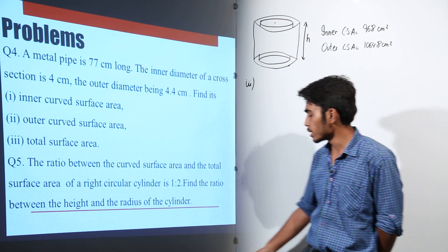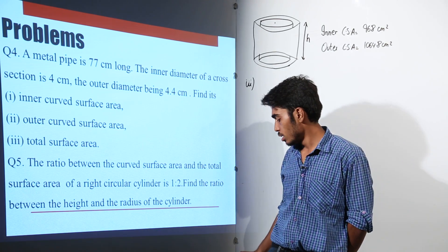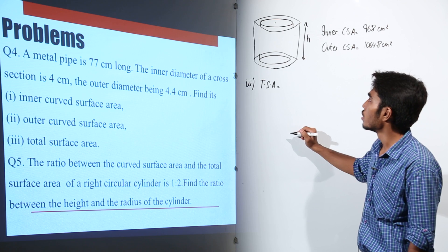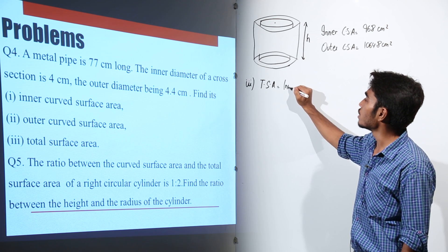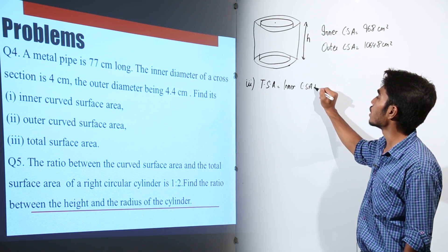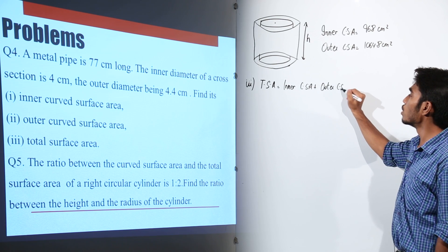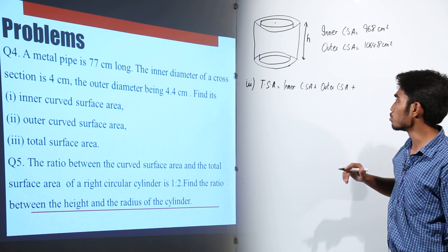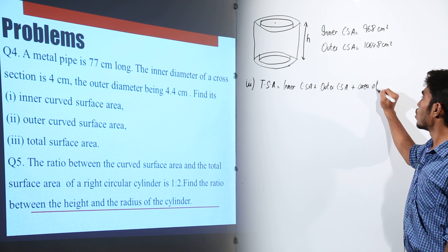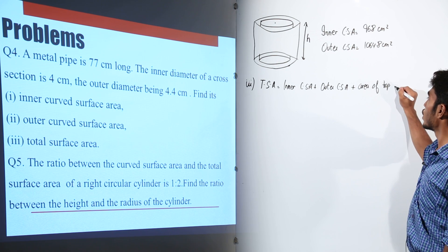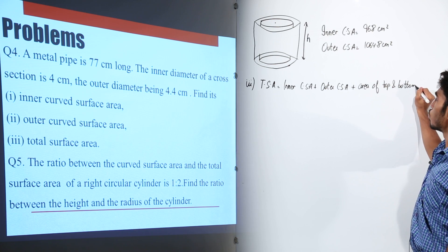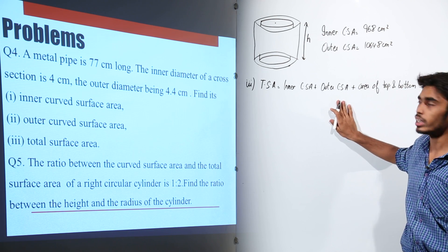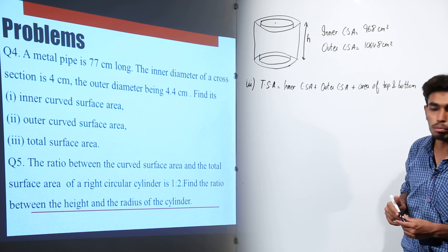Now let us solve the third part, that is the total surface area. The total surface area or TSA would be the inner curved surface area plus the outer curved surface area plus the area of the top and bottom surfaces.